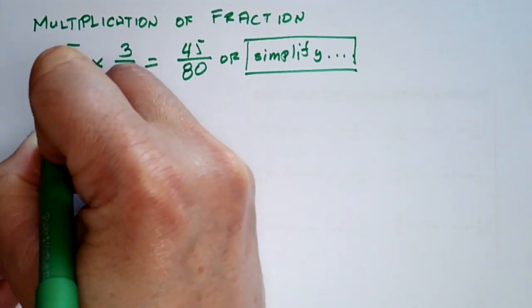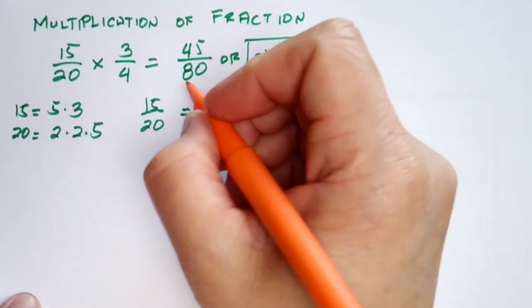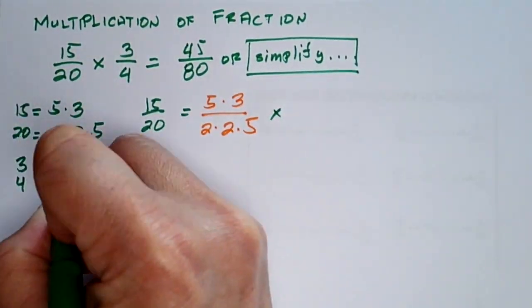For example, let's multiply 15 over 20 and 3 over 4. Now let's factor out 15, 20, and 4 into their prime factors.